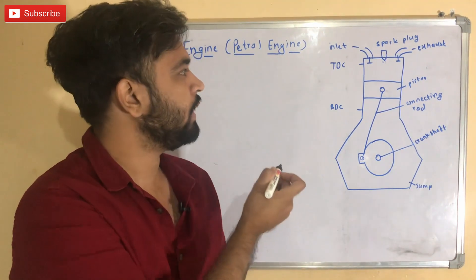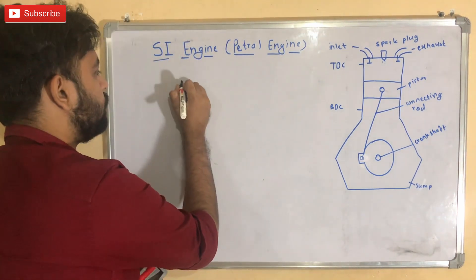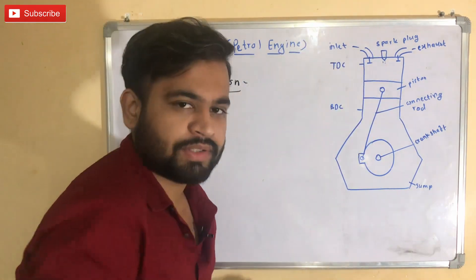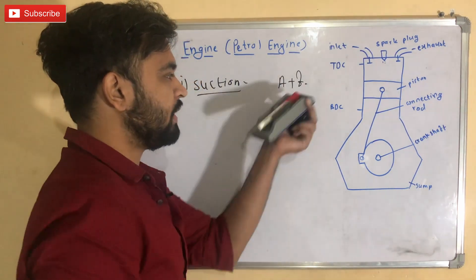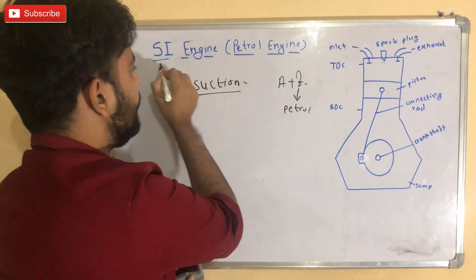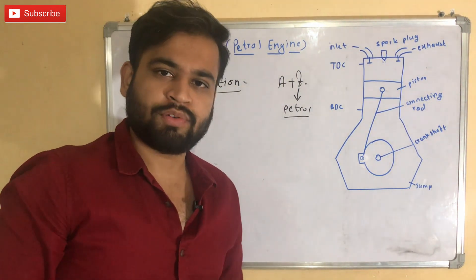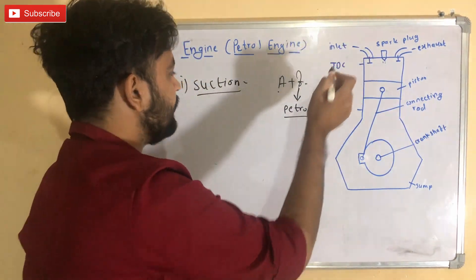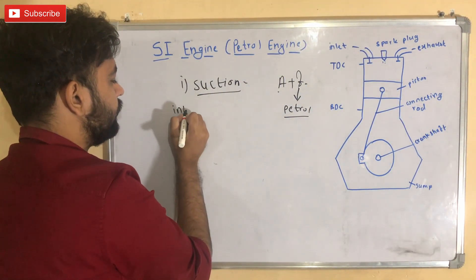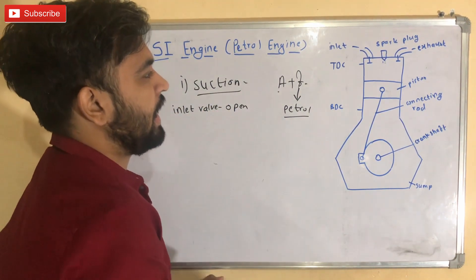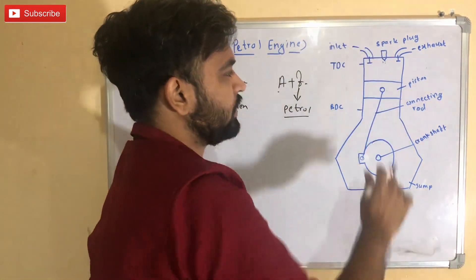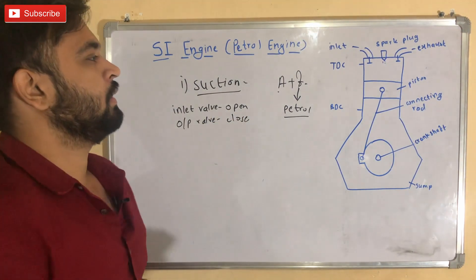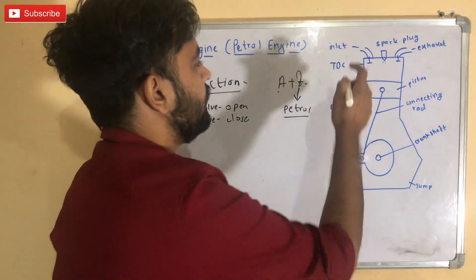The first major step of a four-stroke engine is suction. In this step, a mixture of air and fuel — where the fuel is petrol — is drawn into the combustion chamber. During suction, the inlet valve is open and the exhaust valve is closed, as the air-fuel mixture is being admitted into the combustion chamber.